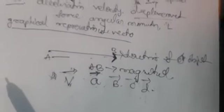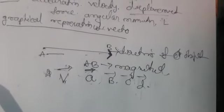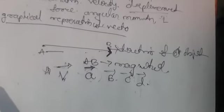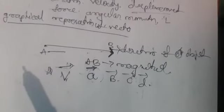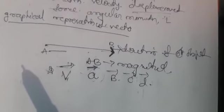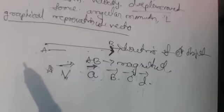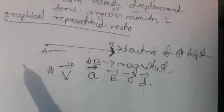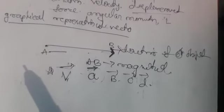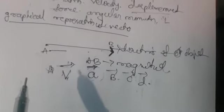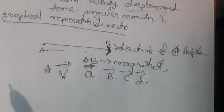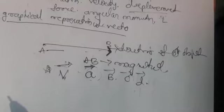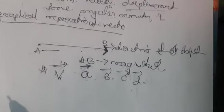The fourth point is laws of vector. A scalar does not follow the laws of vector algebra. The laws of vector algebra include two types: addition of a vector and subtraction of a vector. Under addition, there are two laws — the triangle law of addition of vectors and the parallelogram law of addition of vectors. Vector quantities do follow these algebraic laws, but scalar quantities do not.